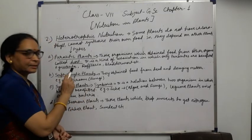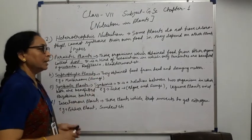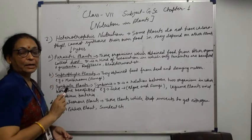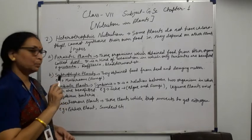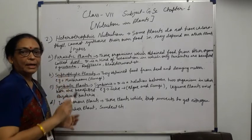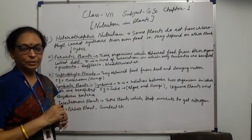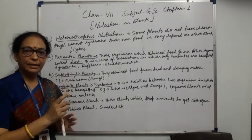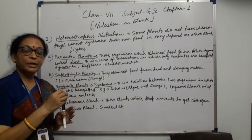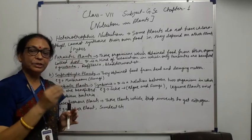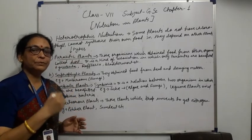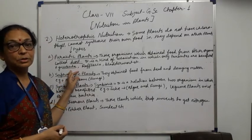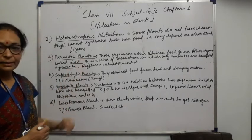For example, that is Cuscuta, Rafflesia, and Bladderwort. There is one more important term in parasitic plants: haustorium. In Cuscuta, there is a haustorium — a tubular structure — which wraps completely around the plant in a circle, traps it, and then penetrates through the stem to the tissue, and obtains food from it. This is also the best example of parasitic plants.